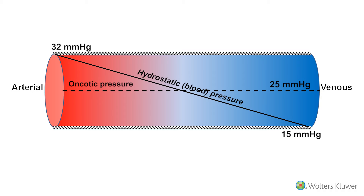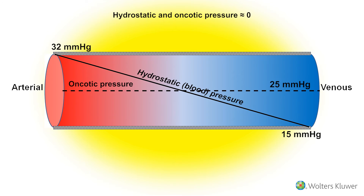In this example, the interstitium surrounding the capillaries, represented by the color yellow, has a hydrostatic pressure and an oncotic pressure of around zero.